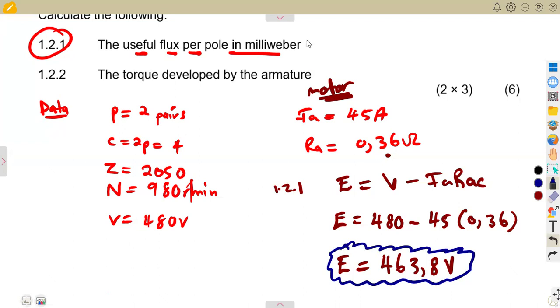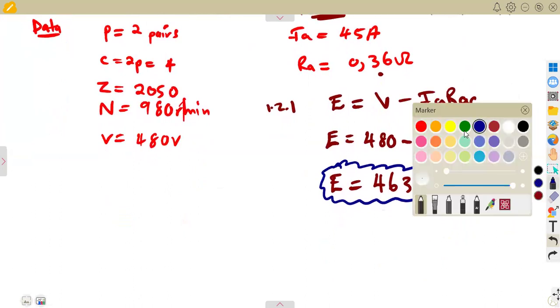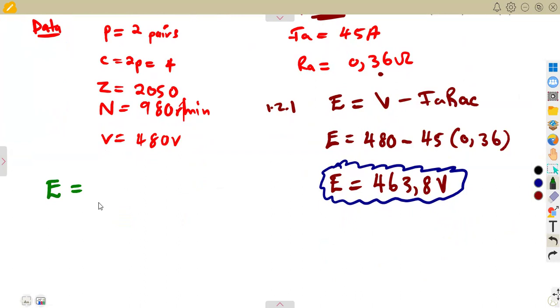So with the generated EMF, what about the useful flux? We're given it in milliwebers. We saw that the same generated EMF that we just calculated now can also be calculated from the formula: generated EMF is equal to 2P times N times Z times flux over 60C, provided this is in revolutions per minute. The useful flux is there, so we can think of calculating this.